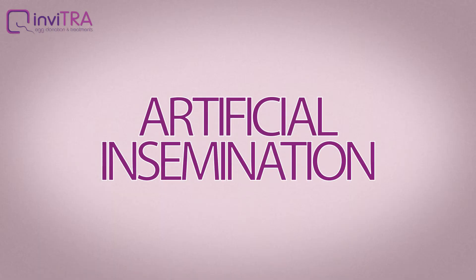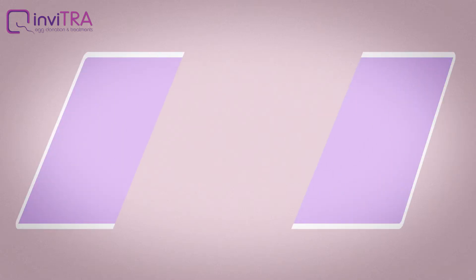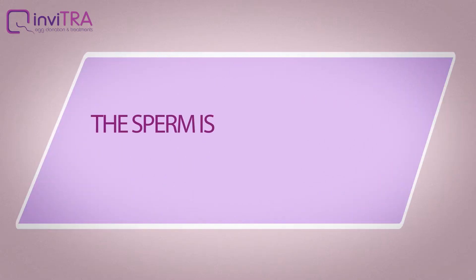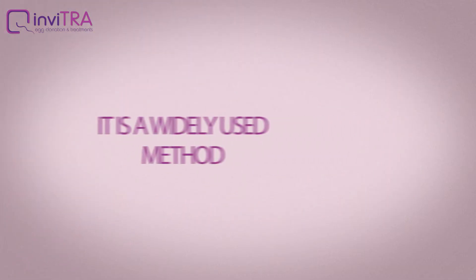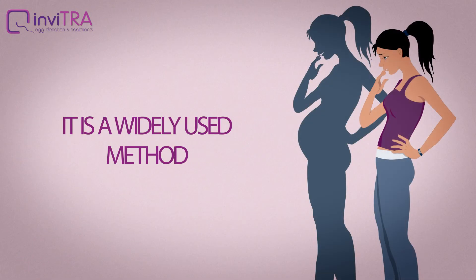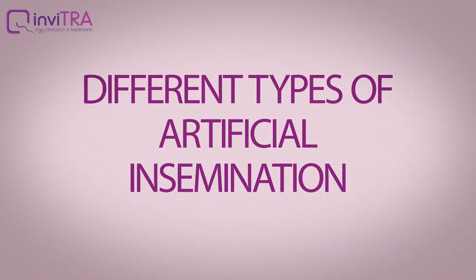Artificial insemination is an assisted reproductive technology through which sperm are inserted into the female reproductive system. It is a widely used method to treat female infertility in women wishing to get pregnant. Artificial insemination can be classified into several types according to the origin of the sperm sample.